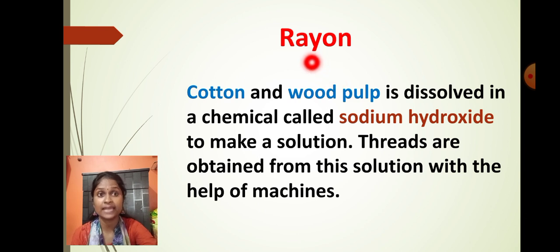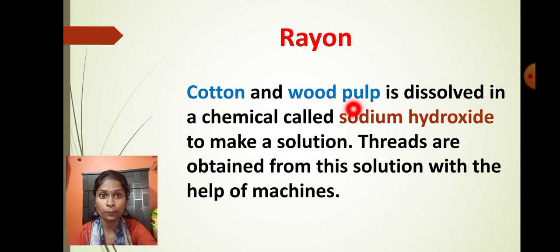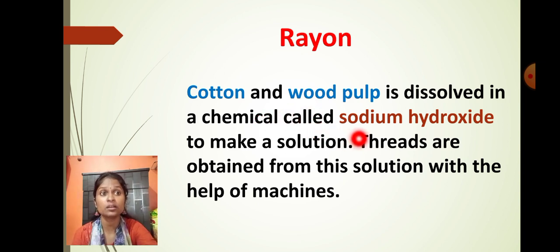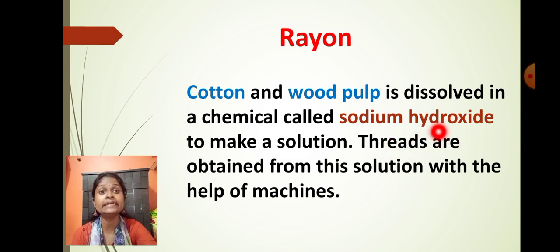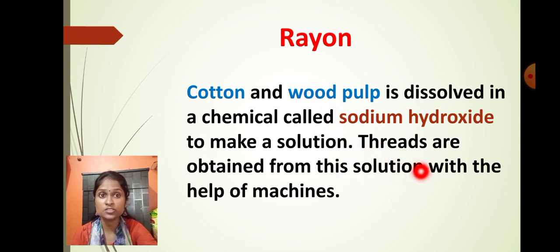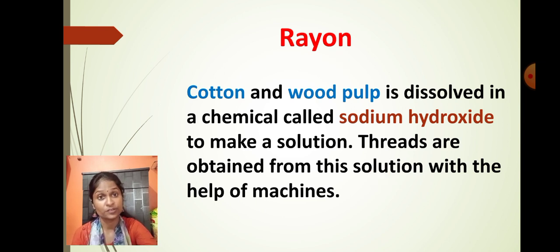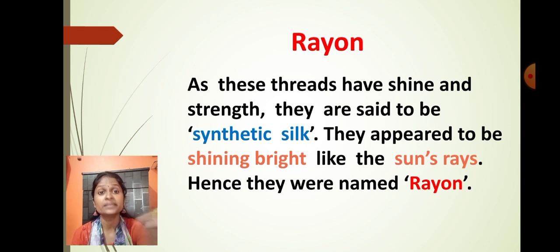The next thing we are going to learn about is rayon. Cotton and wood pulp are dissolved in a chemical called sodium hydroxide. Once the cotton and wood pulp are mixed with sodium hydroxide solution, threads are obtained from this solution with the help of a machine. The threads obtained by this machine are our rayon material.